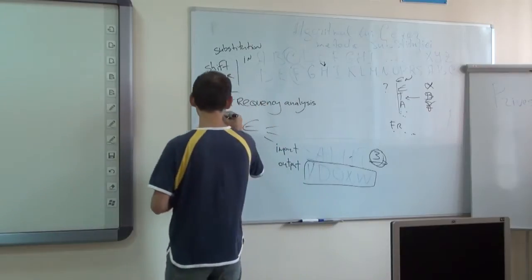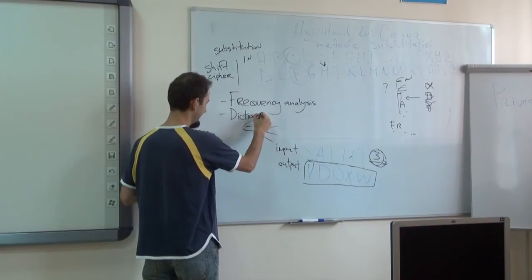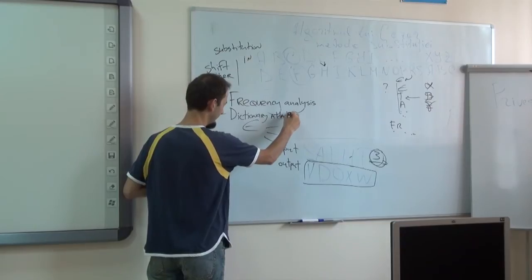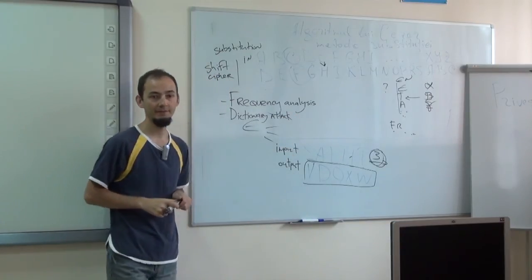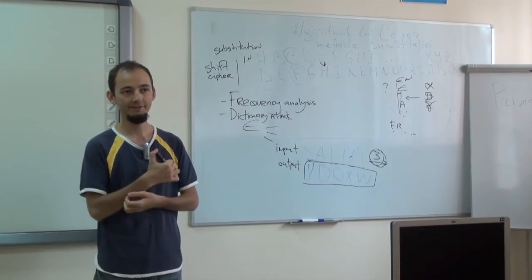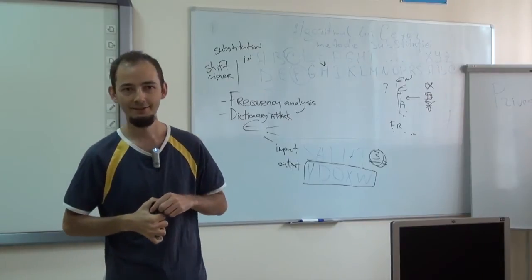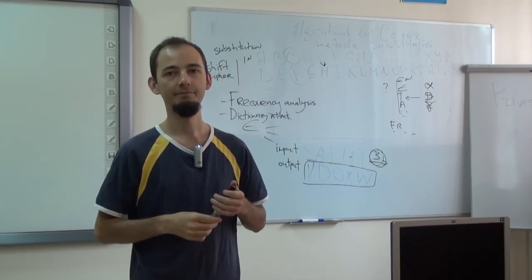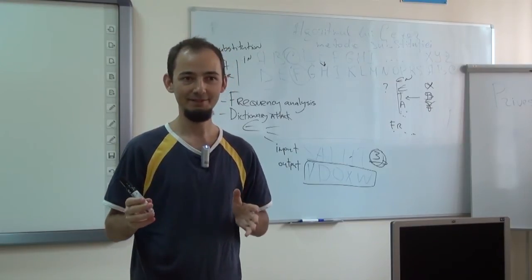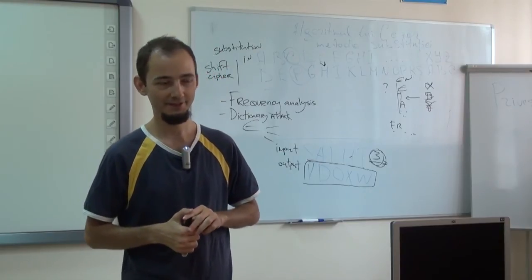The second method is to use a dictionary attack. How would you implement that? Knowing that this text is in English, we can shift each letter until we find words that are in the dictionary. Well, let's take it one step at a time. You asked what is a dictionary attack.